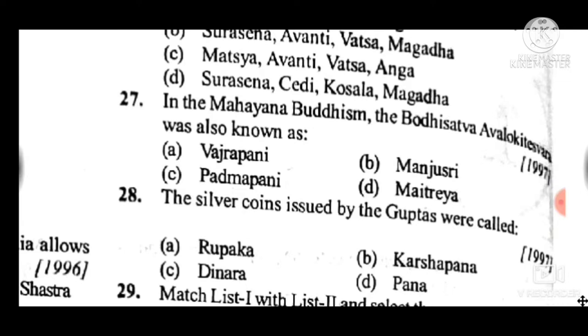Question 28: The silver coins issued by the Guptas were called — the answer is A, Rupaka.